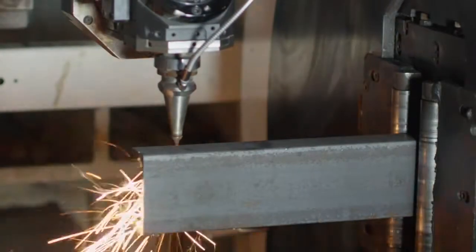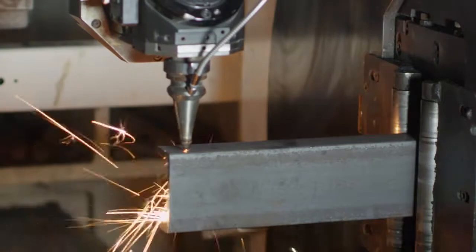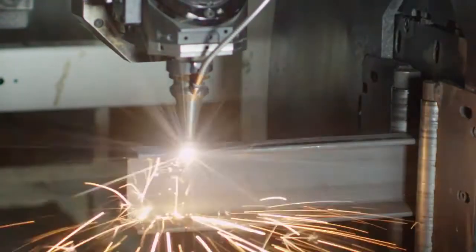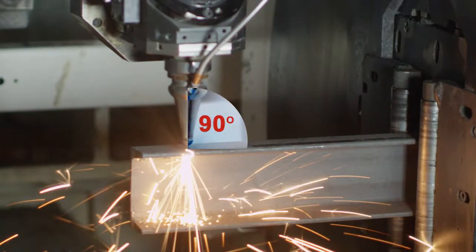When cutting channel pieces using the normal surface cutting process, the laser head is positioned exactly 90 degrees from the surface of both the web and the flange of the channel piece.